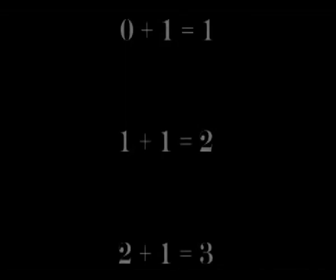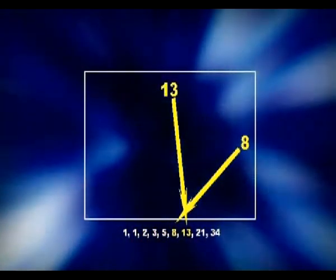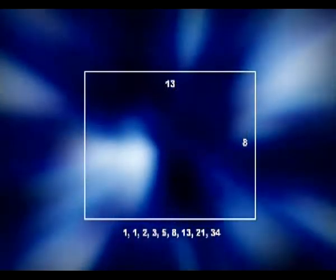Each number is obtained by adding the last two digits together. A rectangle with the length and width of any two of the numbers of this sequence forms what is known as the golden rectangle, a perfect rectangle.